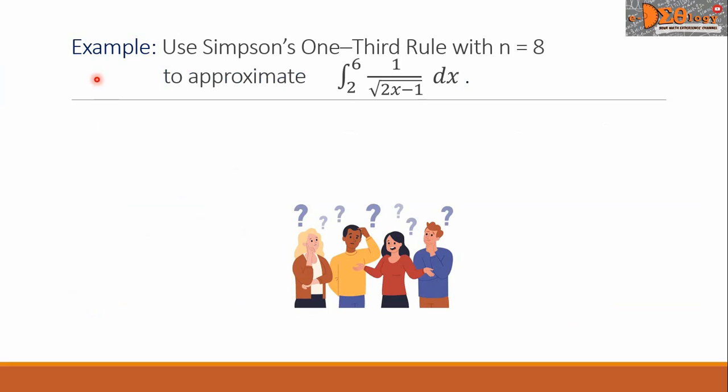This is the example. Use Simpson's one-third rule with n equals 8 to approximate the integral from 2 to 6 of the function 1 all over the square root of the quantity 2x minus 1, dx.